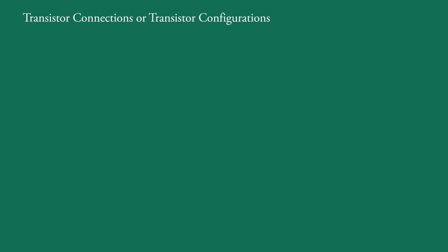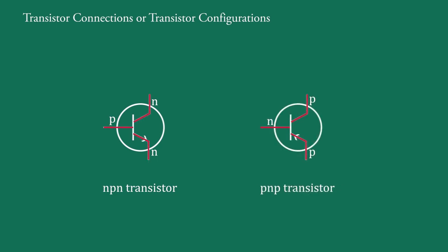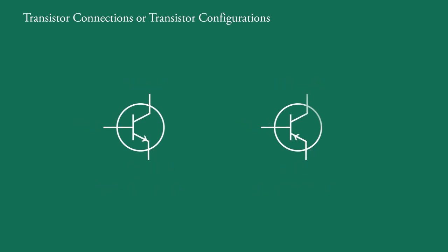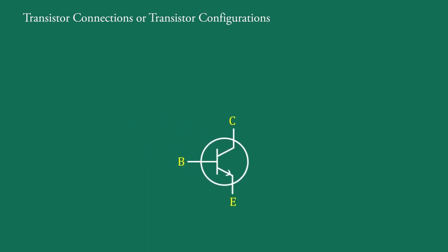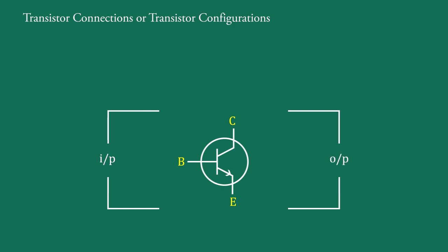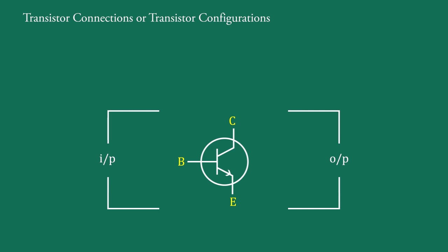Transistor Connections or Transistor Configurations. Transistors are of two types: NPN Transistor and PNP Transistor. There are three terminals in a transistor: base, emitter, and collector. When a transistor is connected in a circuit it requires two pairs of terminals — one pair for the input and the other pair for the output. But here one terminal is less, so one of these three is taken as common terminal at input as well as at output. It means there are three different ways to take a common terminal.